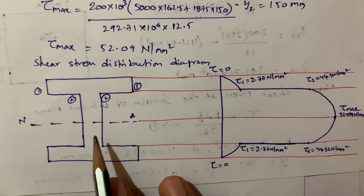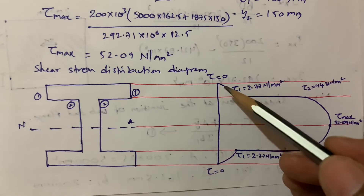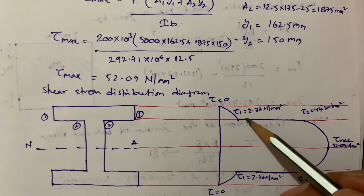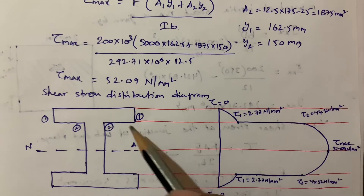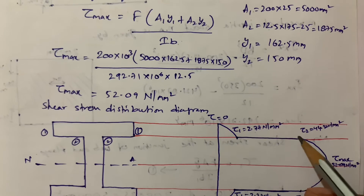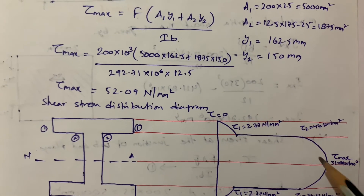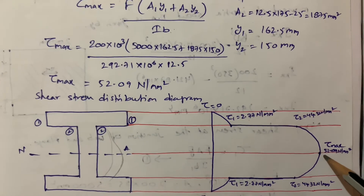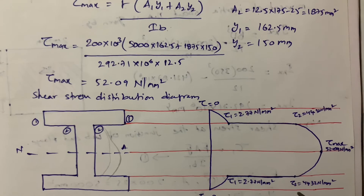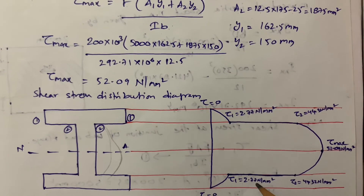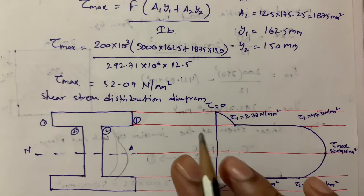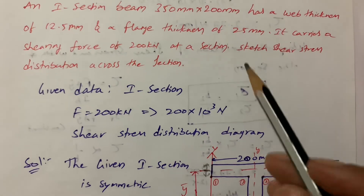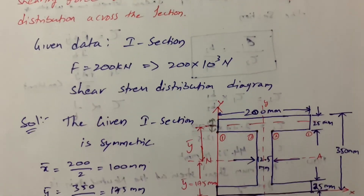Now we draw the shear stress distribution on the I-section. Starting from the baseline τ = 0, τ₁ = 2.77 N/mm² at the flange-web junction, τ₂ = 44.32 N/mm² just inside the web at the junction, and τ_max is the maximum at the neutral axis, shown as a parabolic peak. The web buckles in the direction of the applied load. The distribution is symmetric, so the same values appear on the other flange. This is how the I-section shear stress distribution problem is solved.